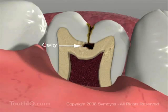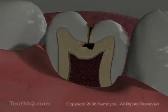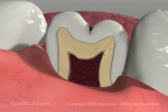Over the years, many attempts to stop pit and fissure tooth decay have been made. Here are the most common, their strengths and weaknesses.